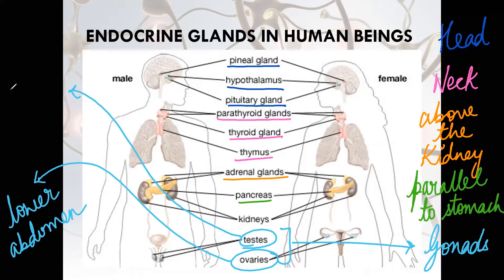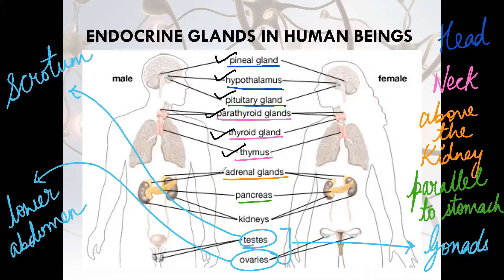To review: testes are present in the scrotum. Pineal, hypothalamus, and pituitary are located in the head region. Parathyroid, thyroid, and thymus are in the neck region. Adrenal is above the kidney; pancreas is parallel to the stomach. Testes and ovary together are known as gonads — testes are located outside the body in the scrotum, and ovaries are located in the lower abdomen region.